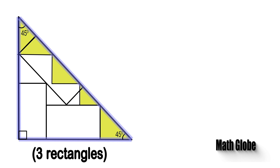Then, by considering all internal angles of rectangles, we note that the yellow triangles are isosceles, so again their base angles are the same and 45 degrees.